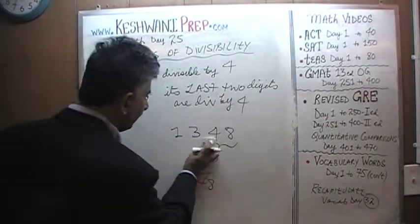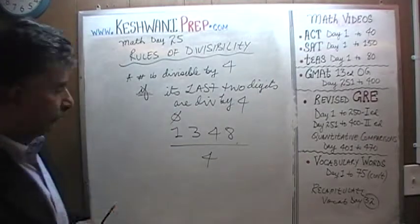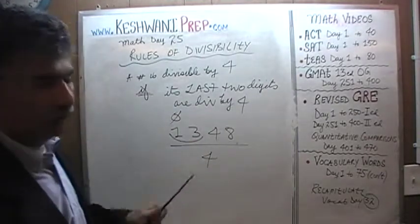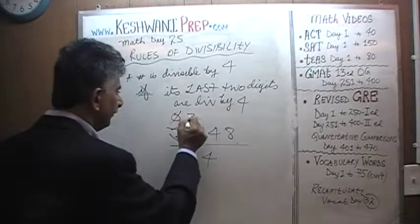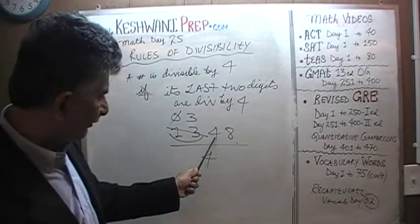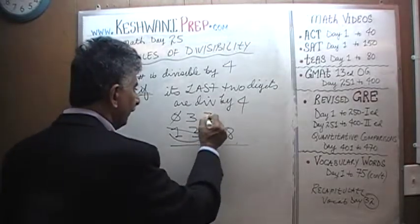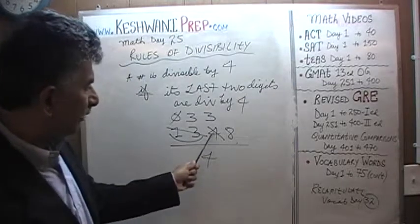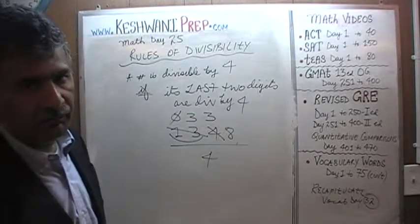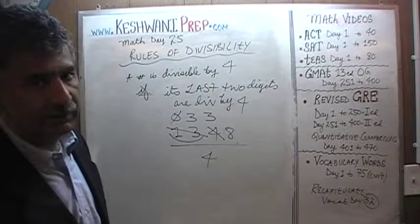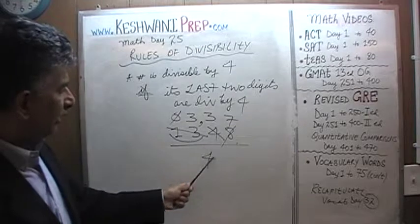Let's divide 1,348 by 4. 1 has no 4s, so 1 joins 3 to become 13. 13 has three 4s (12), remainder 1 joins 4 to become 14. 14 has three 4s (12), remainder 2 joins 8 to become 28. 28 has seven 4s. The answer is 337. 1,348 divided by 4 is 337.